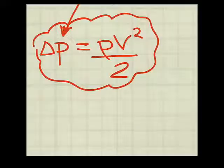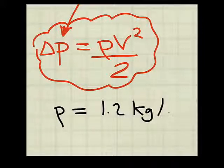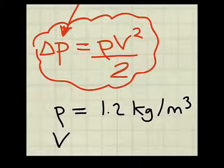We're given some information. The density of the ambient air is specified as 1.2 kilograms per cubic meter. And the mean velocity of the wind is specified as 60 miles per hour.